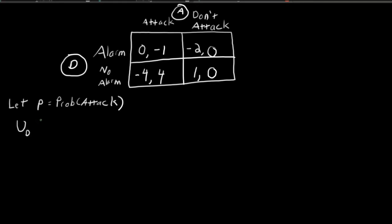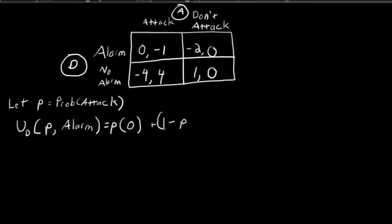What is the defender's expected utility when the attacker randomizes with probability P and the defender sounds the alarm? P percent of the time, the attacker will attack and the defender will sound the alarm — in that case, the defender earns zero because he detected the attacker. However, one minus P percent of the time, the attacker will not attack, and if the attacker doesn't attack and the defender sounds the alarm, he earns negative two.